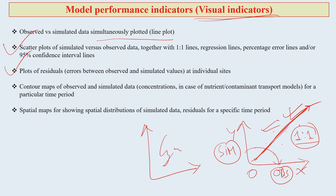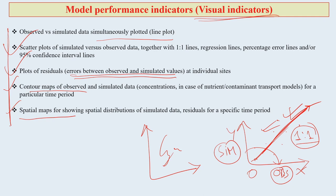Plots of residuals at individual sites — errors between observed and simulated values — can also give visual indications of model performance. Contour maps of observed and simulated data help assess model performance for a particular time period. Spatial maps showing spatial distributions of simulated data residuals for a specific time period are also used as ways of visualizing spatial model performance.